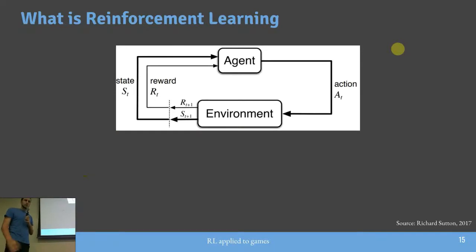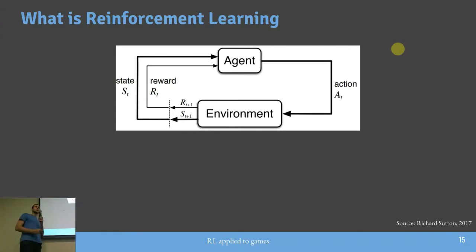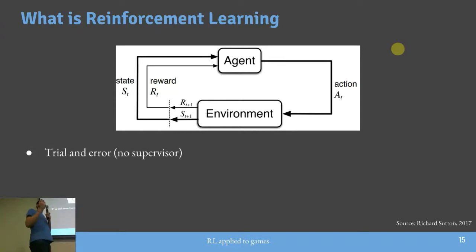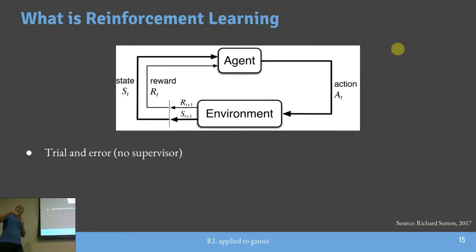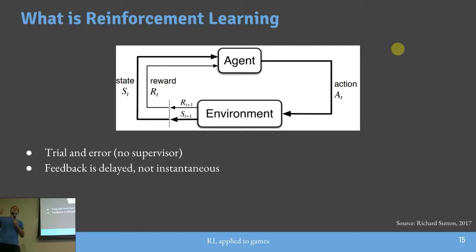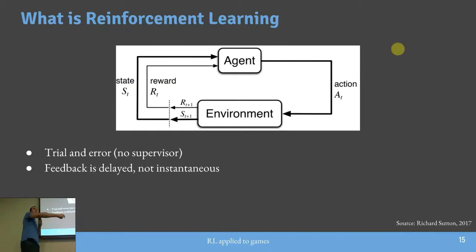O Reinforcement Learning baseia-se no seguinte: eu tenho um agente, tenho um ambiente, e esse agente está interagindo com o ambiente, executando ações. O agente recebe do ambiente o que chamamos de reward — um sinal que diz o quão bem ou mal ele está indo. É uma abordagem de tentativa e erro. O agente, que pode ser um robô, vai aprendendo através de tentativas e erros recebendo feedbacks. Esse feedback nem sempre é imediato — às vezes demora muito, só chegando no final.